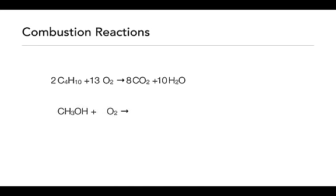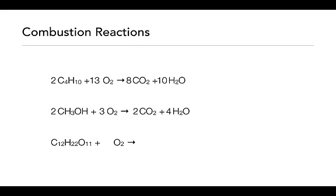The second example is methanol, which is wood alcohol — at one time used in IndyCars before they switched to ethanol. Methanol burns with oxygen to produce, again, carbon dioxide and water. The oxygen present in methanol doesn't affect what the products are, then you balance the equation. Another example is sucrose reacting with oxygen — like table sugar burning on a stove or a marshmallow in a fire. Sucrose reacts with oxygen to produce carbon dioxide and water, and once balanced you have your combustion reaction.